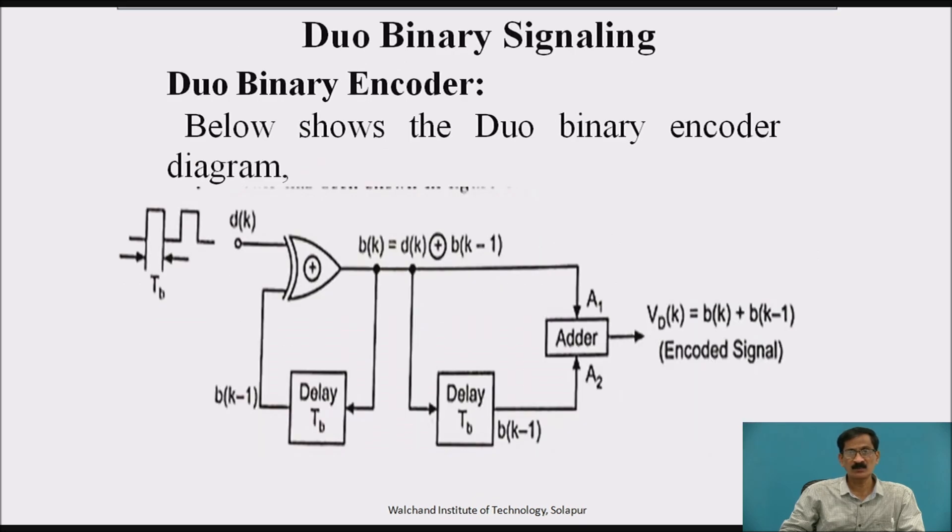So this is the complete diagram of duobinary encoder in which the input signal d k is given to an XOR gate, one input is d k, another input to XOR gate is b k minus 1 which is the delayed version of XOR gate output b k. So b k equals XOR of d k and b k minus 1. So output b k will be at logic 1 when either d k or b k minus 1 is at logic 1. Otherwise, it will remain 0.